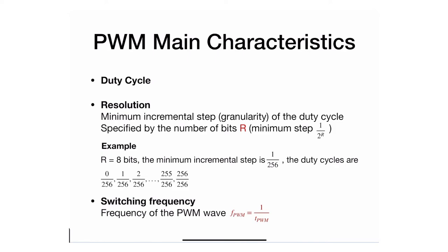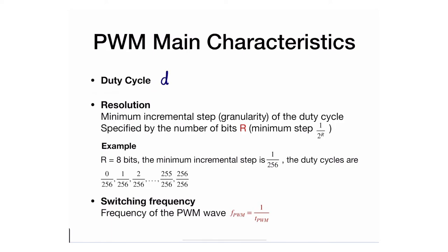Generally speaking, a pulse-width modulation signal will have what we call a duty cycle. The duty cycle, which I'll call D, is the property that controls the amount of voltage or power delivered to an analog device. We have discussed it separately in a separate segment.